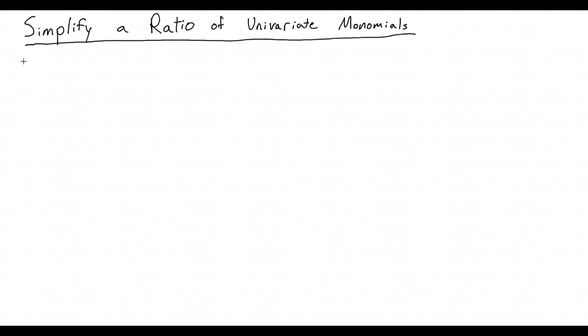The goal of this topic is to simplify a ratio of univariate monomials. What is a ratio of monomials? We know that a ratio is something like 1 half, 4 fifths, or a to b.